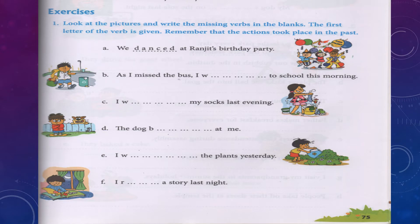Look at the pictures and write the missing verbs in the blanks. The first letter of the verb is given. Remember that the actions took place in the past. A. We danced at Ranjit's birthday party. B. As I missed the bus, I walked to school this morning.